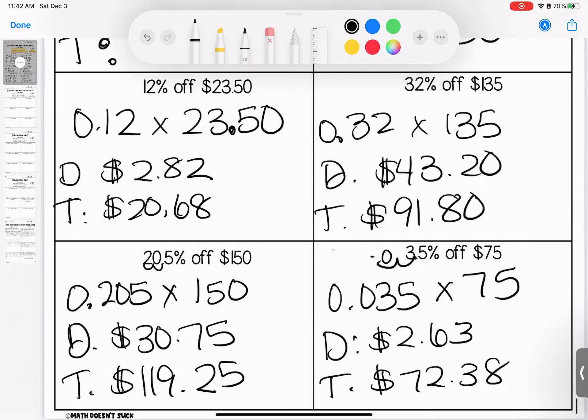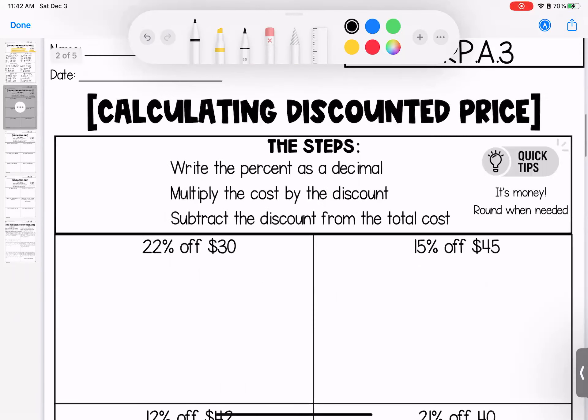Any questions? Bring these with you to class. Page two, looking at discounted price. Remember, it's money, round when needed. Money only has two decimal places. Write your percent as a decimal. Multiply that by the total we were supposed to pay. Subtract that amount from the total cost because a discount means our price should be getting smaller.